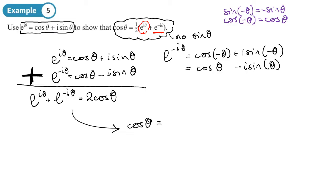Dividing by 2, cosθ equals ½(e^(iθ) + e^(−iθ)). This identity comes up again later in one of the later sections. You should now be able to do Exercise 1A on page 5.